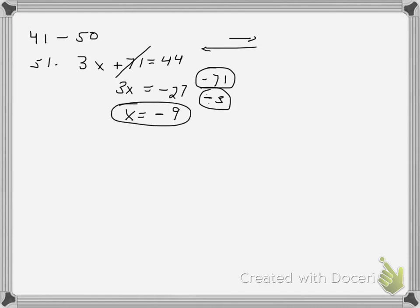For 53, it says .4x minus 9 equals 13. How would we do that? Well, we would add 9 to both sides, so I'm going to get .4x. 13 plus 9 is 22, and now I will divide both sides by .4.